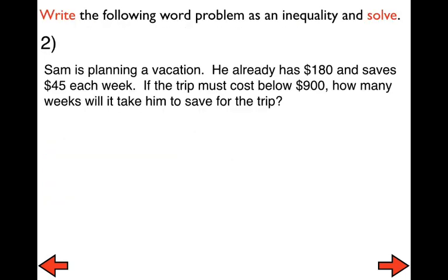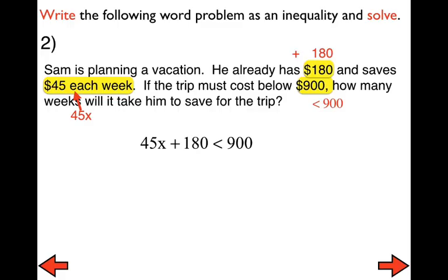Let's take a look at number two. Pause this flipped lesson, set up your inequality, then press play to check it, then pause again and solve. Sam is planning a vacation. He already has $180 and saves $45 each week. If the trip must cost below $900, how many weeks will it take him to save? '$45 each week' means that's what changes every single week — that's where the variable goes. He already has $180, so that's plus $180. The total must be below $900, and 'below' means less than. Here is our inequality — pause and solve it, then answer with a complete sentence.